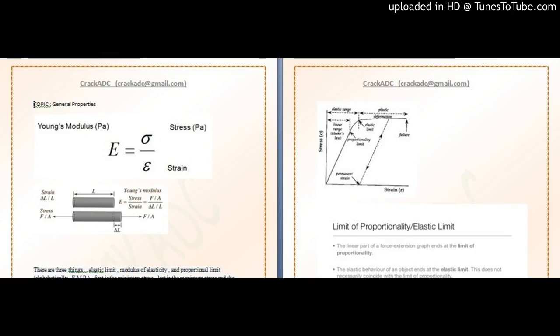What is strain? Strain can be of different types, but we will now define linear strain. Linear strain: suppose you are hammering something and the length changes. Earlier its length was 8 centimeters; after hammering, its length is 10 centimeters. Change in length is 2 centimeters — 10 minus 8 — divided by the original length, so 2 divided by 8. That is the strain: how much difference has been created per unit of the original length.